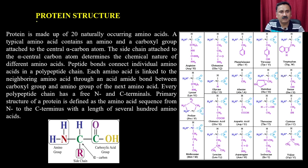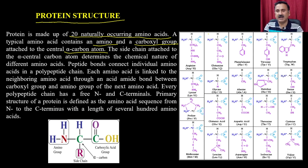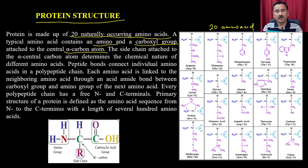Proteins are made up of 20 naturally occurring amino acids. A typical amino acid contains an amino component and a carboxyl group attached to the central alpha carbon, with side chains. Based on the side chains you can have 20 different types of amino acids — some positively charged, some negatively charged, some hydrophobic, some hydrophilic, and some polar.